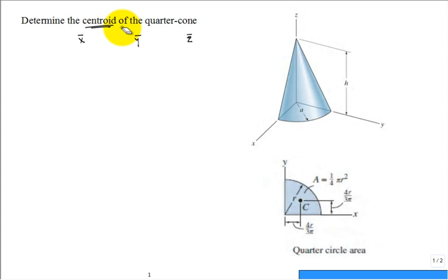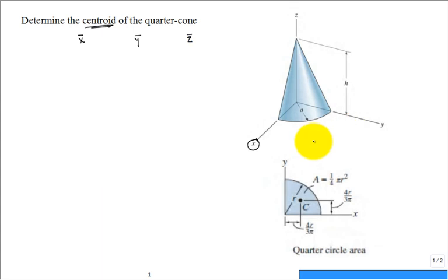When you look at a problem like this, it's easy to make a math error, so take a look at what you expect x̄ to be. Should x̄ ever be negative? No, that's not reasonable. How about greater than a? No — a is the radius, so x̄ should be between 0 and a. Likewise for ȳ. For z̄, it should be between 0 and h — and you'd probably guess it's close to one-third h.